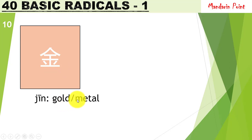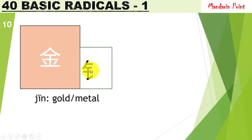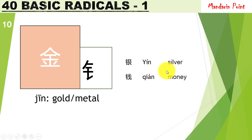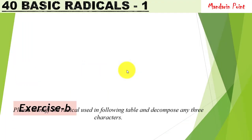The radical 金 jīn means 'gold' or something related to metal. Any character having this radical will represent something related to metal or money. For example, 钱 qián meaning 'money' — you can see this radical on the left side. And 银 yín meaning 'silver,' something related to metal — this radical is present on the left side.